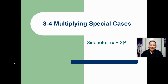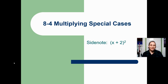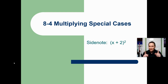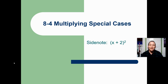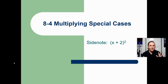Hi guys, today we're finally moving on to our next and final section for this chapter. In this section we'll be looking at special cases. These are problems that have a special pattern to them, and so we could potentially not have to show work on these problems if we can memorize the pattern. That being said, if you're not good at memorizing or if you don't understand the pattern, you can always fall back onto one of our previous methods like the box method or foiling or distributing.